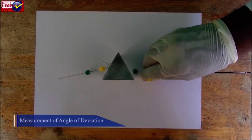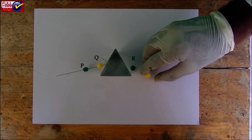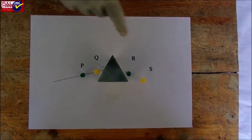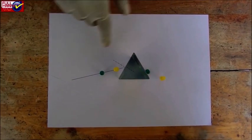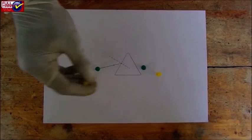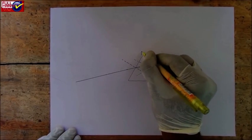Measurement of Angles of Deviation: Remove the prism, pins R and S, and pins P and Q and encircle their pin pricks. Extend the line PQ to meet at T. With the help of a protractor, measure the angle between RS and PT. This is angle of deviation.